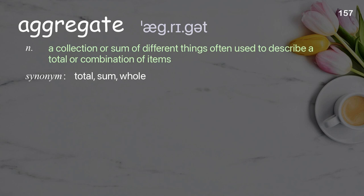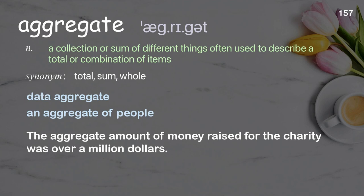Aggregate: a collection or sum of different things, often used to describe a total or combination of items. Examples: data aggregate; an aggregate of people; the aggregate amount of money raised for the charity was over a million dollars.